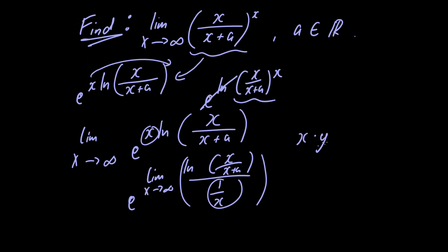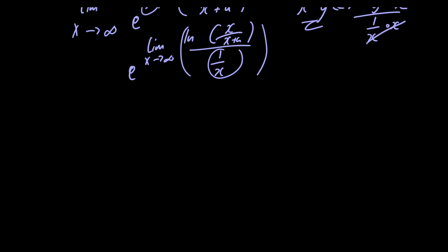All we've done is rewrite the x in this form. We can do that because x times y is equivalent to y divided by 1 over x — multiplying through by x recovers the original. The reason for writing it this way is that it makes it easier to apply L'Hôpital's rule.